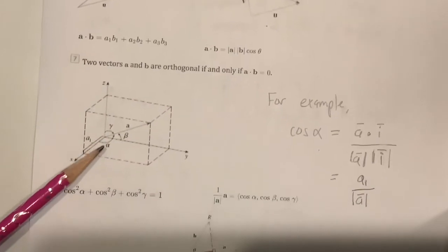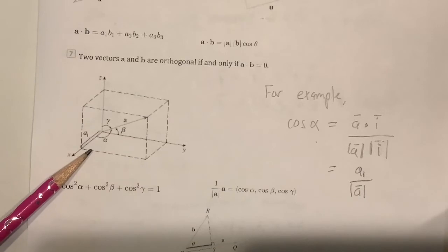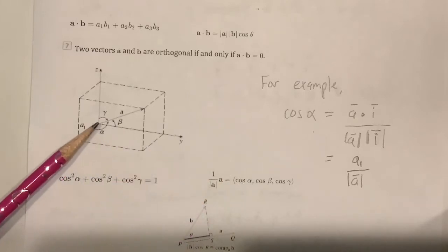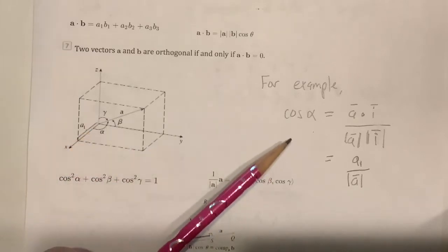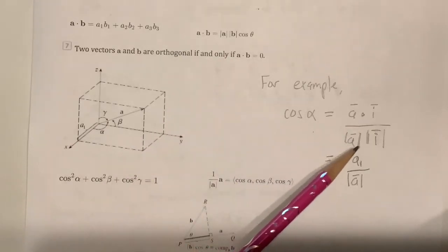We talked about the direction angles. Those are the angles between the vector a and the axes and it turns out the components of the unit vector in the direction of a happen to be the cosines of the direction angles. You can see that because cosine alpha by this formula here is a dot i over magnitude of a magnitude of i,